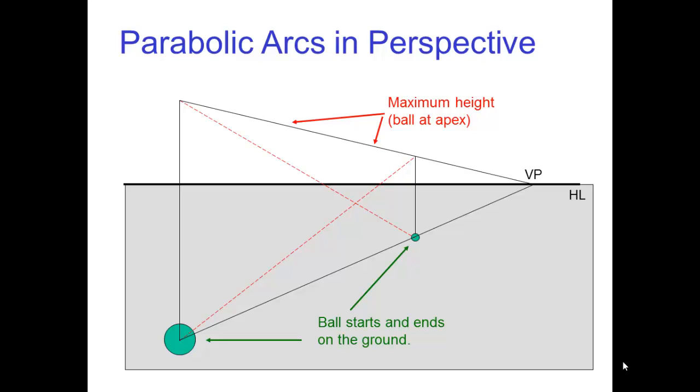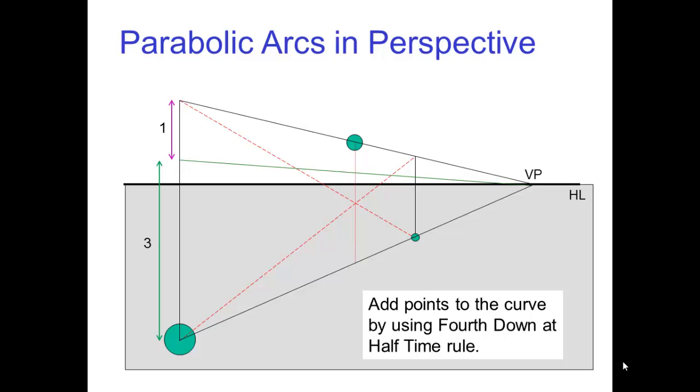Next, you pick the apex height and draw a line to the same vanishing point. The apex is located by drawing diagonals just as before. Next, you add points by using the fourth down at half time rule. You can check that a line through these points give the breakdown points and goes to the same vanishing point.